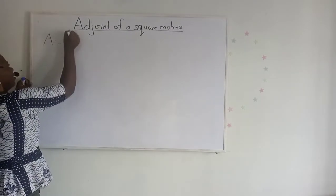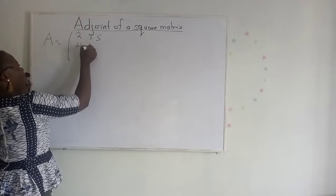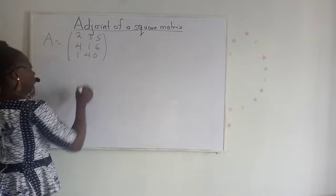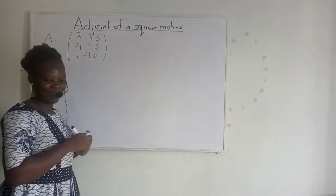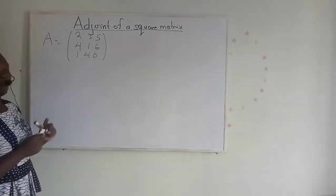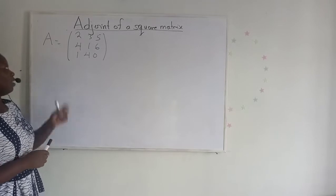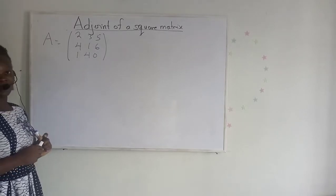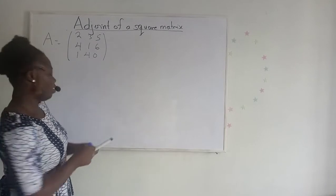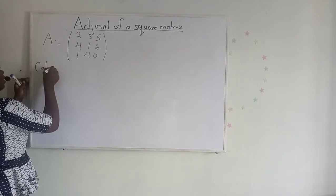The matrix was: 2, 3, 5 / 4, 1, 6 / 1, 4, 0. So this was the matrix we were working on. We want to find the adjoint of the matrix. To find the adjoint, we need to find the cofactors, so let's find the cofactors of this matrix.